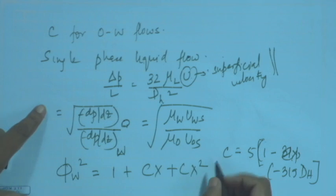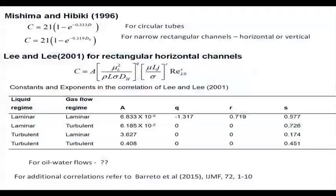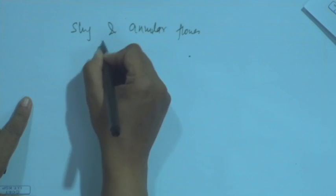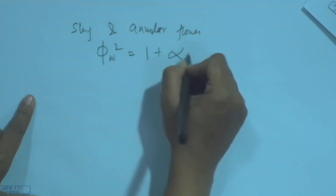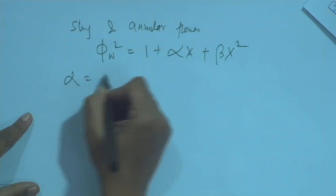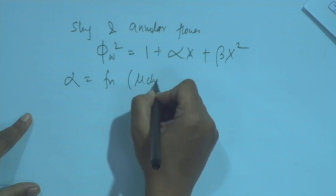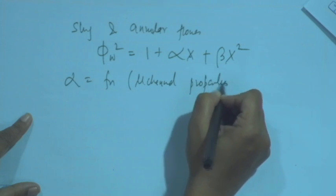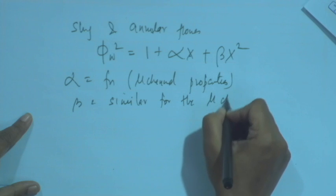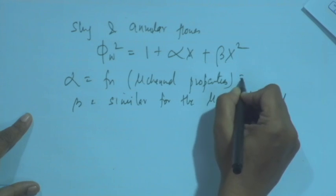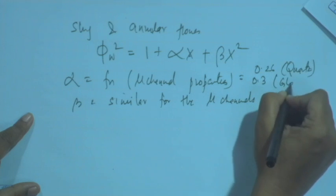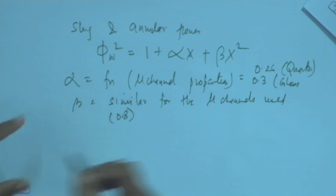There are several other relationships, for example for slug and annular flows, where people have suggested correlations with parameters α and β. It was observed that α is a function of micro-channel properties — point 0.26 for quartz micro-channels and 0.3 for glass micro-channels — while β was more or less similar at around 0.8 for both micro-channels.